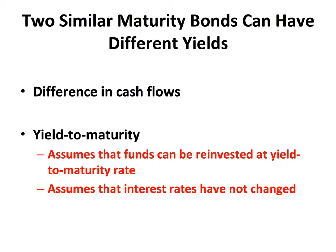The yield to maturity can vary between two bonds of similar maturity if they have differences in cash flows. So two treasuries with the same maturity can have differences in yield to maturity because of differences in cash flow. Yield to maturity assumes that funds can be reinvested at the yield to maturity rate, which may not be the case, and it also assumes that forward rates and spot rates have not changed over the time period. We'll give an example of this at the end of this module.